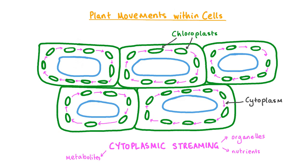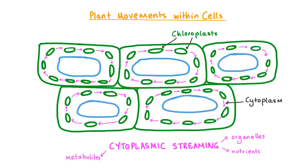Let's see how much we've learned by having a go at a couple of practice questions. Which of the following statements about plants is correct? Plants are fully immobile organisms and their direction of growth cannot be changed; plants have no form of sleep-wake cycle to respond to dark-light cycles; plants can respond to stimuli like light and touch by moving; or plants communicate between their own structures using a central nervous system.